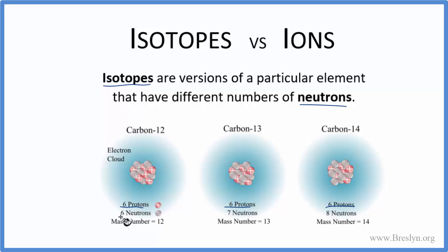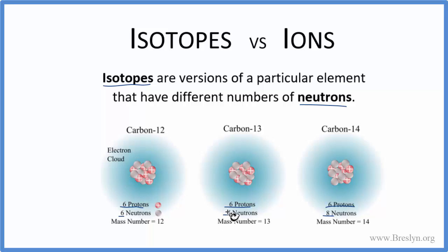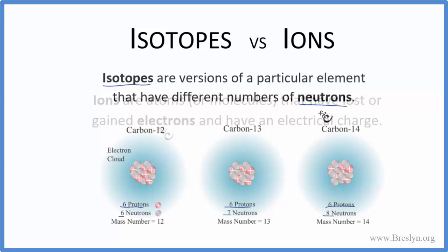The difference, though, is we have six neutrons here — six plus six gives us 12 — seven neutrons, seven plus six is 13, and then this has eight neutrons. These are isotopes of carbon because they have different numbers of neutrons.